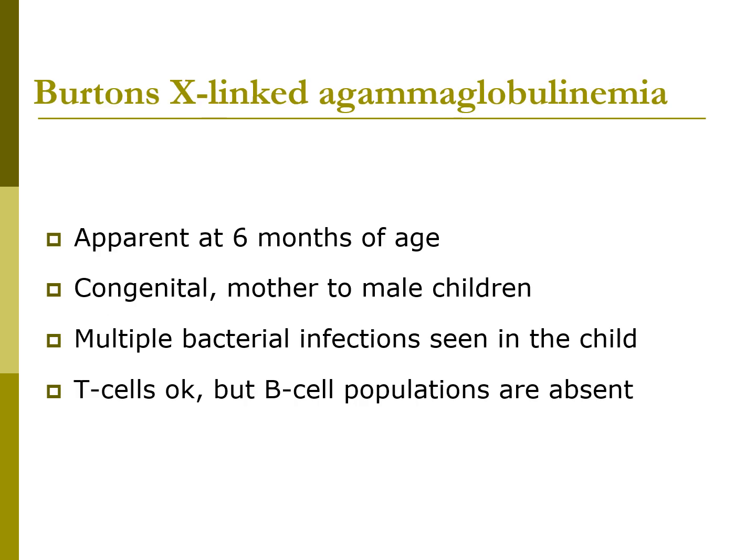A specific type is called Burton's X-linked agammaglobulinemia. This disorder is usually apparent by about 6 months of age. It's a congenital disorder that usually goes from mother to male children, although it can go from male to female children. These kids have multiple bacterial infections such as Haemophilus influenzae, Streptococcus, Staphylococcus, Pseudomonads, and occasionally Pneumocystis. This is generally a respiratory type of disease.